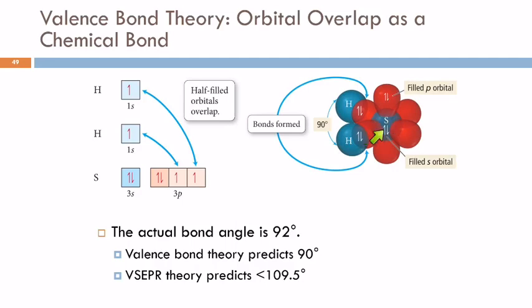And then that full s orbital for sulfur is depicted here in the blue. So this predicts that this bond angle is 90 degrees. Because we have these p orbitals. The p orbitals are in the x, the y, and the z coordinates. They're at 90 degree angles to each other. That s orbital's not having anything to do with it. It's just sitting there. And so these would be 90 degrees. But we know that it's not 90 degrees.